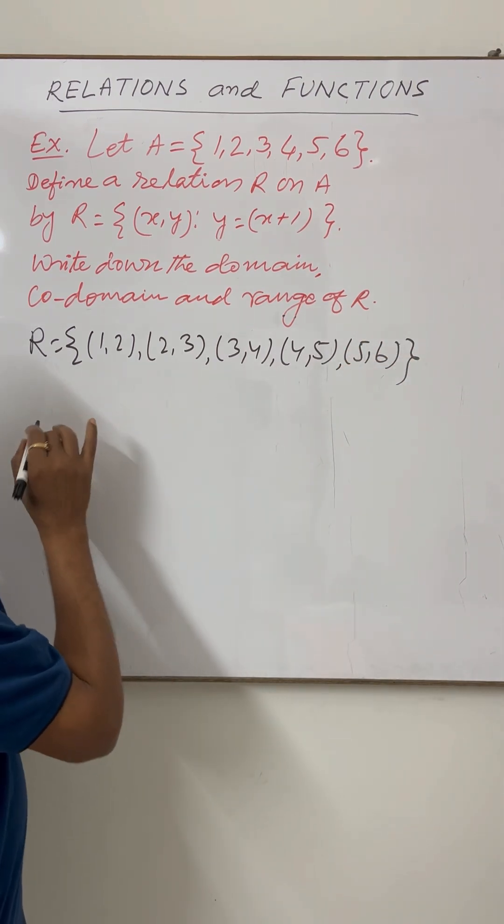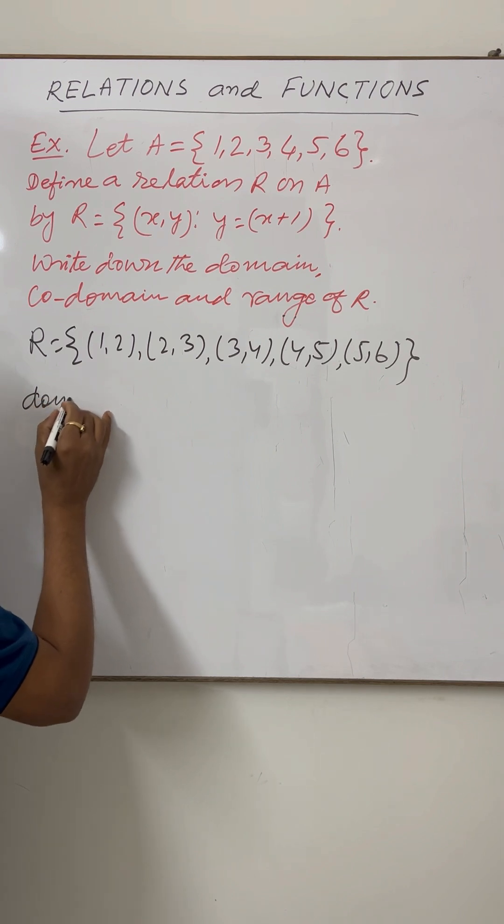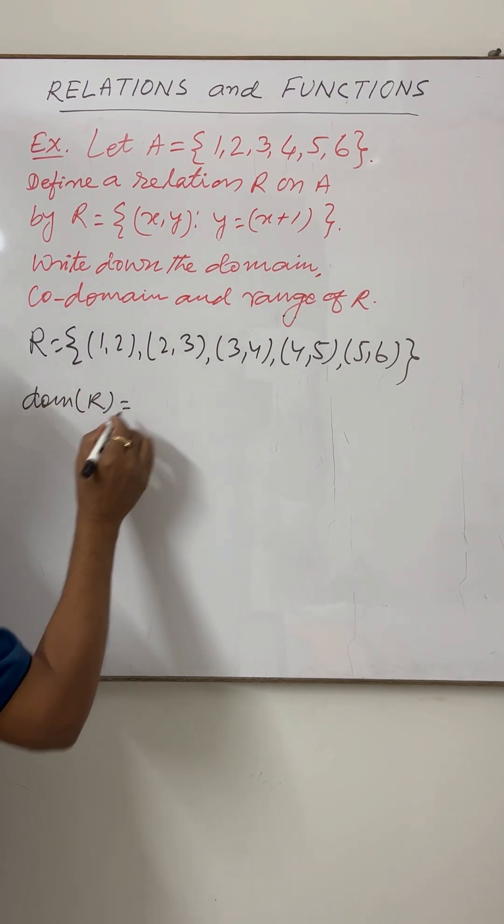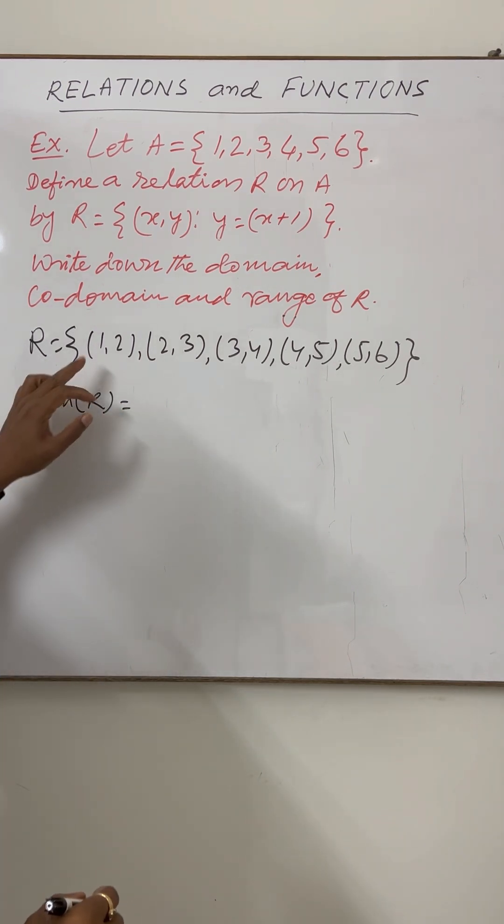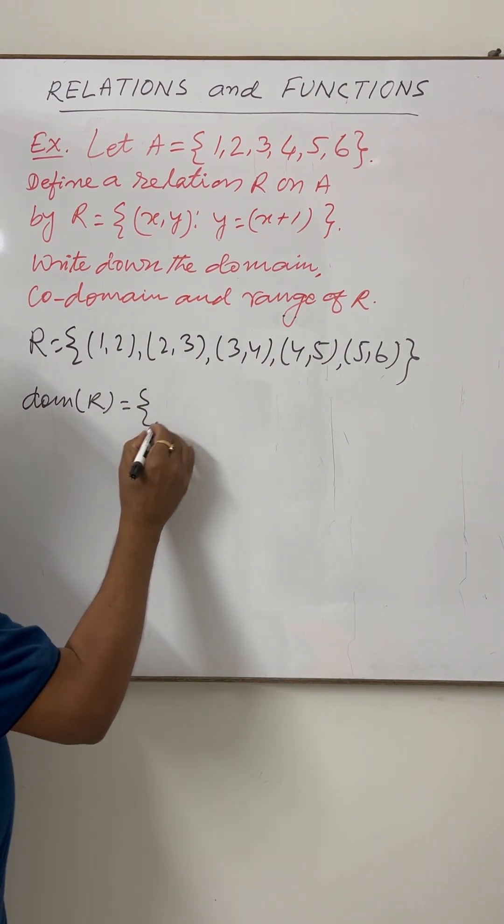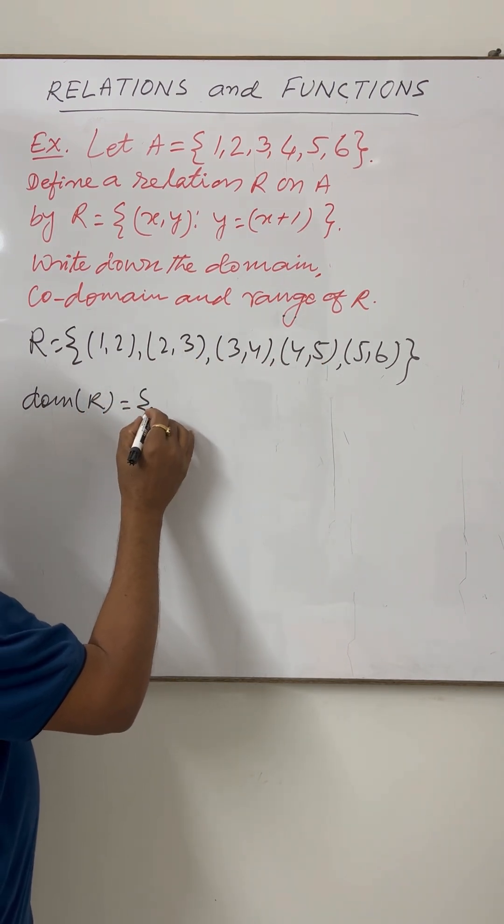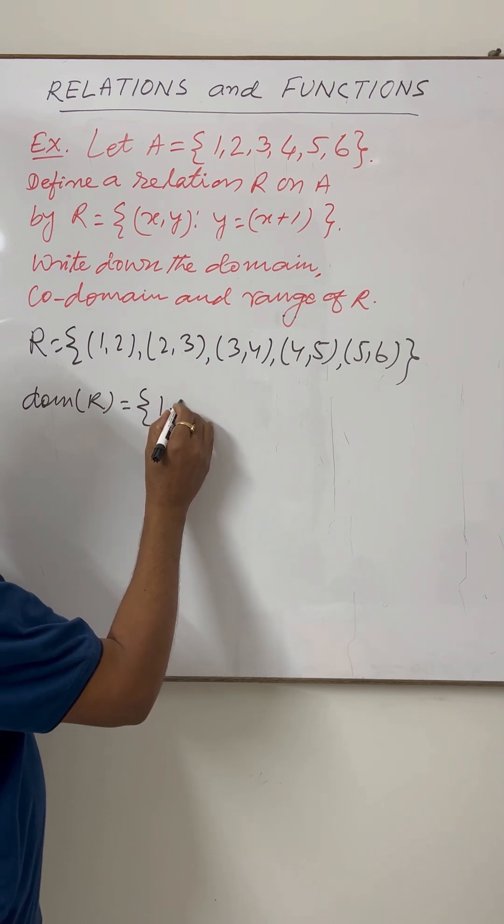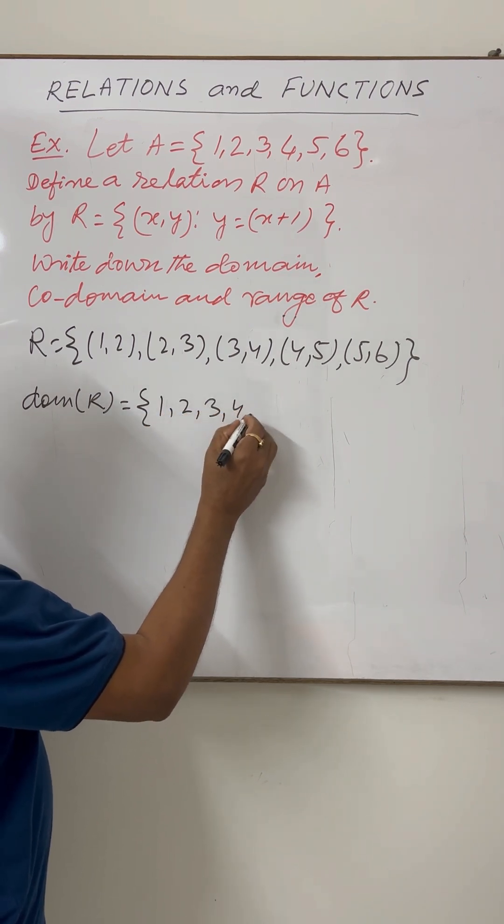This is the relation R. And the domain of this relation is - in domain we take only first elements of these ordered pairs. So this domain of R is a set consisting of elements 1, 2, 3, 4,